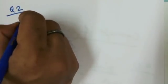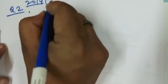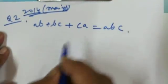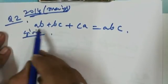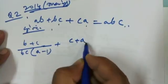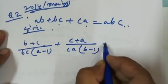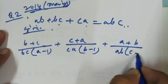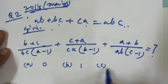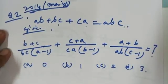Next, question number 2, which appeared in 2014. Given: AB + BC + CA = ABC. What will be the value of (B+C)/(BC) × (A−1) + (C+A)/(CA) × (B−1) + (A+B)/(AB) × (C−1)? Options: A is 0, B is 1, C is 2, D is 3.